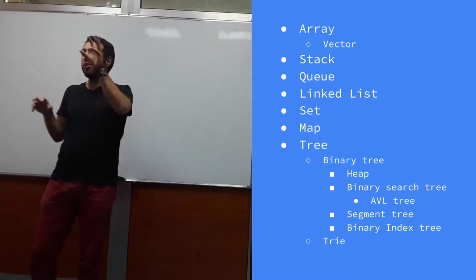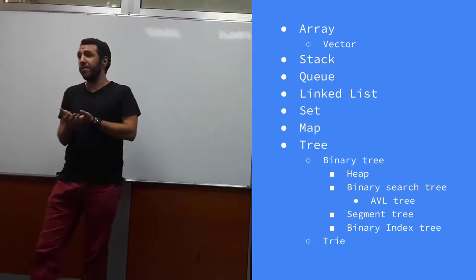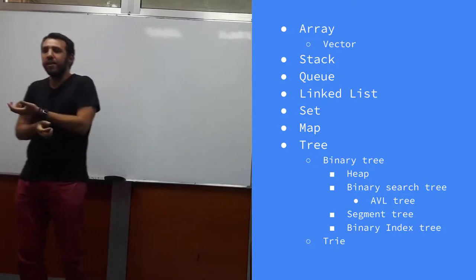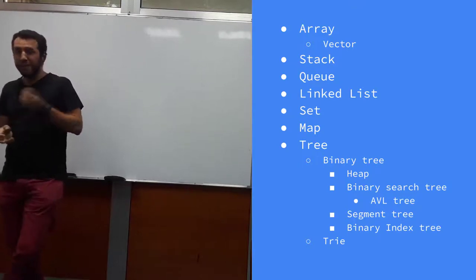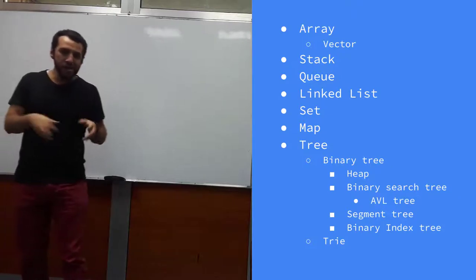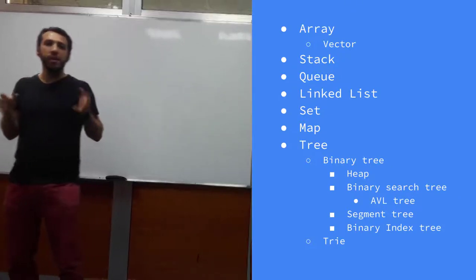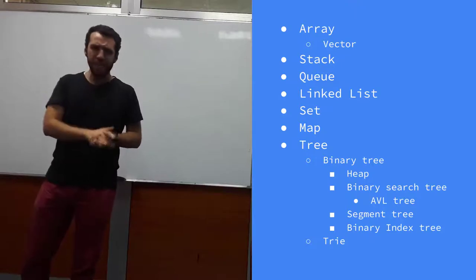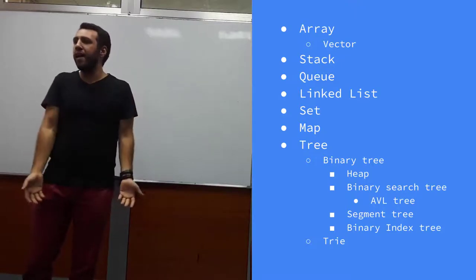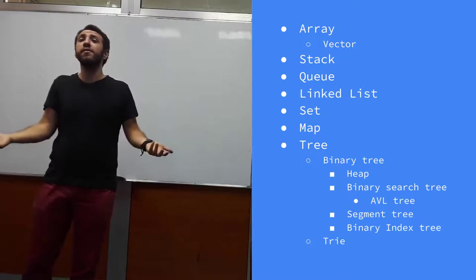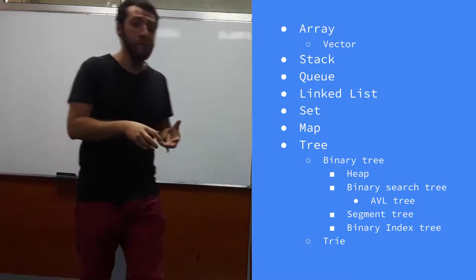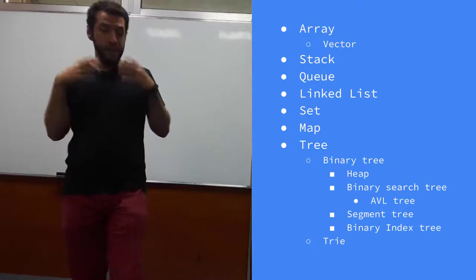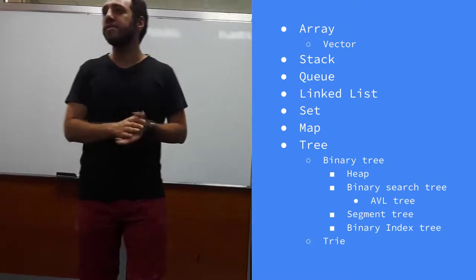In a trie, each node contains one character, and we insert all the words in a dictionary into such a tree. When searching for whether a word appears in a dictionary, this data structure is very handy. Those were just brief use cases and definitions. We are going to dive deep into all of these during the course — except possibly AVL trees — and by the end we will be comfortable using all these data structures depending on our needs.